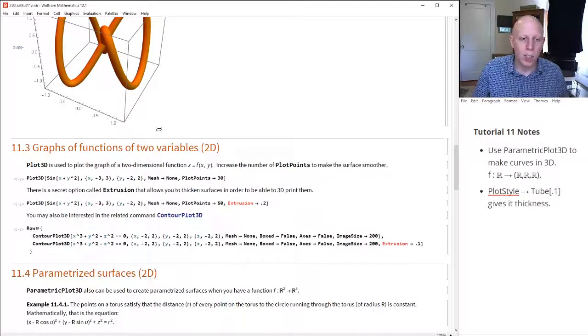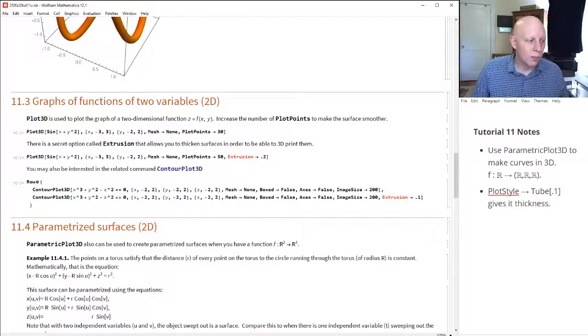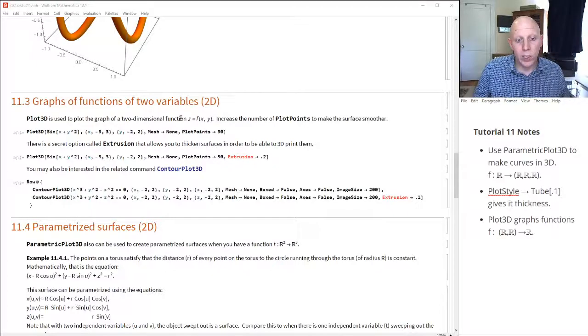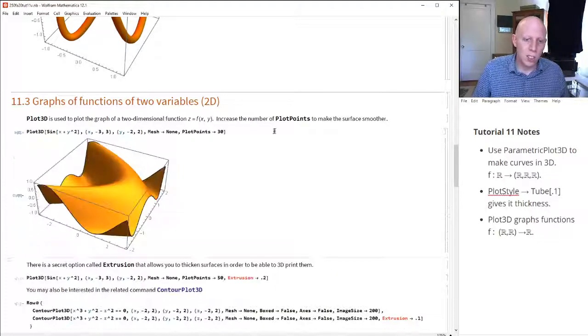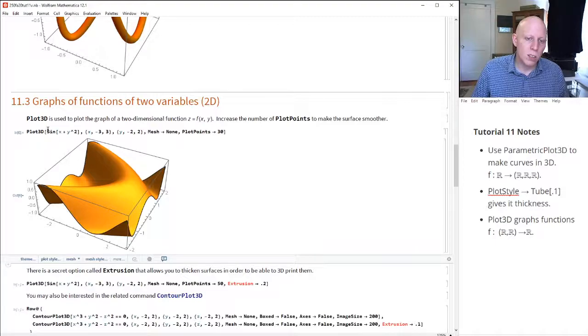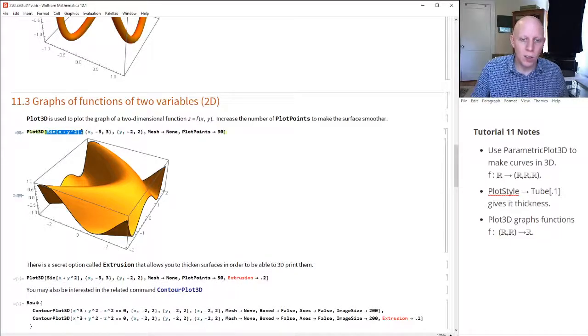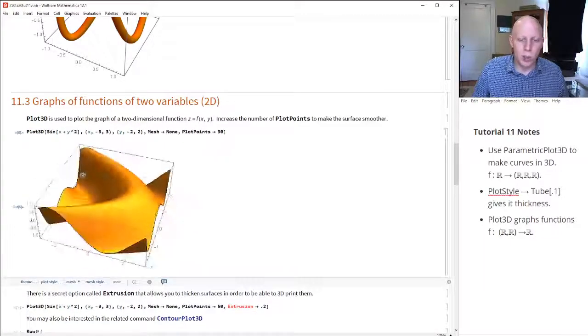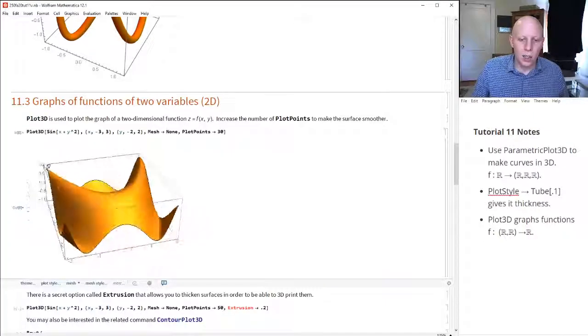All right, so another type of object that you might be used to when you're dealing with three-dimensional graphs is when you have a function like z equals sine of x plus y squared. So this is a function of two variables, with x and y. We let x and y change, and based on those, you get a value z. So when we do that, we get this surface.